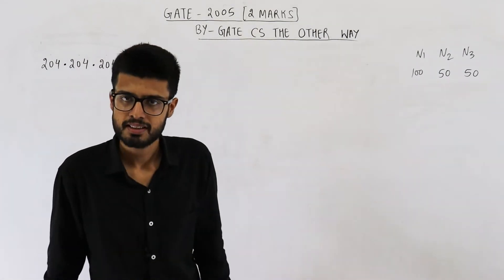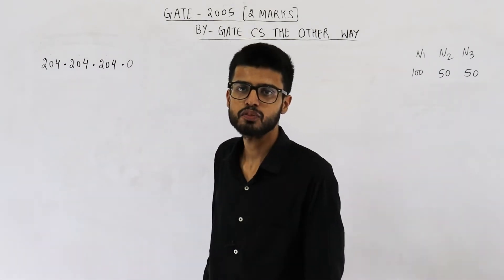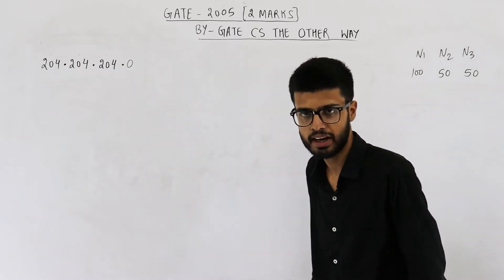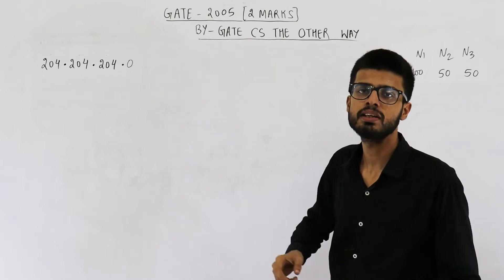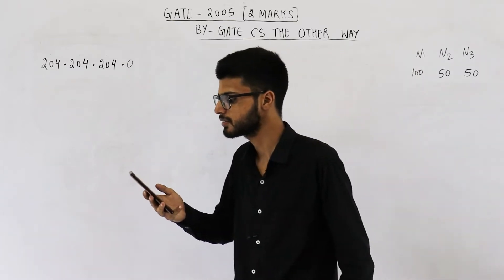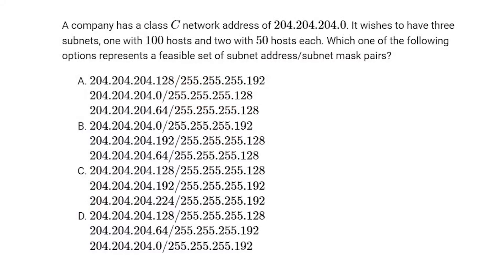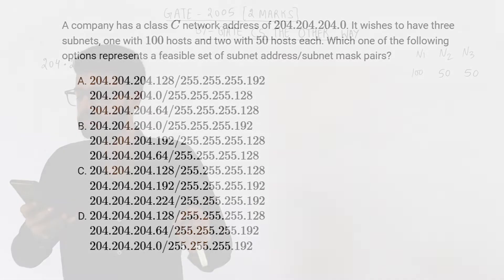Hello people, welcome back to GATE computer science the other way. I'm here with a question from the GATE exam of 2005. This one is for two marks. A company has a class C network address of 204.204.204.0. It wishes to have three subnets: one with 100 hosts and two with 50 hosts each. Which one of the following options represents a feasible set of subnet addresses plus subnet mask pairs?